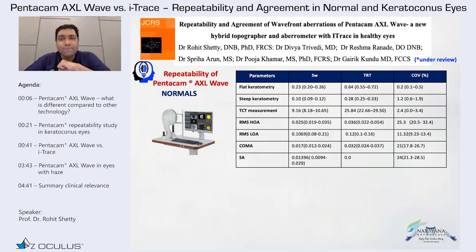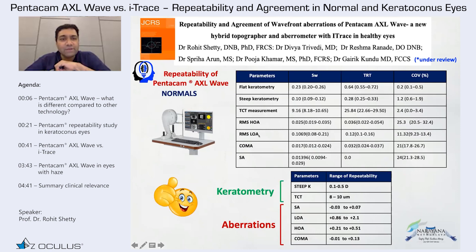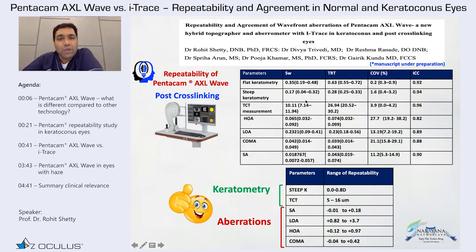You can see the values here. It's just submitted for peer review in JCRS. It's also important to know about repeatability when you're doing cross-linking. We did a repeatability test there as well, and there is a small change, but it's better than what we published in the past.